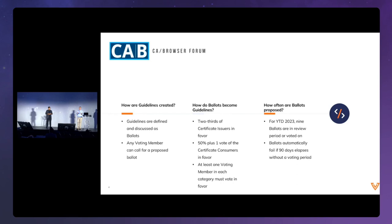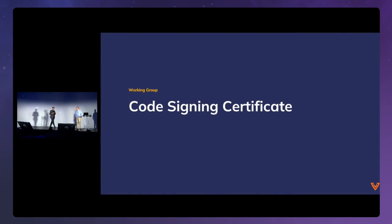The voting is a little unusual. It requires two-thirds of the voting issuers — at least two-thirds of those who vote. For the certificate consumers, it is 50% plus one, and most of the time only four or five consumers vote. Except in the code signing working group, where the only code signing consumer who weighs in on those regulations is Microsoft. There have been around eight or nine new ballots this year. If there is no vote on a ballot within 90 days, it dies and can come back at a later date.